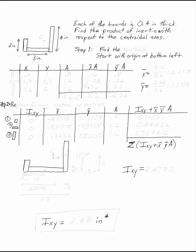Each of the boards in the L bracket is 0.4 inches thick. Find the product of inertia with respect to the centroidal axes. Well, the first thing we have to do is find the centroid because we don't know where that is.